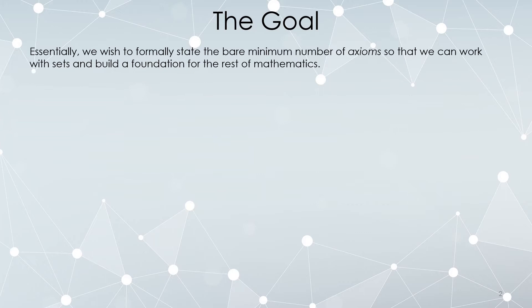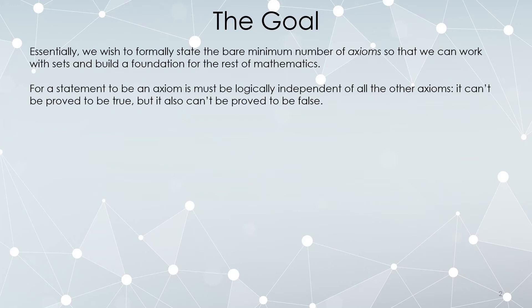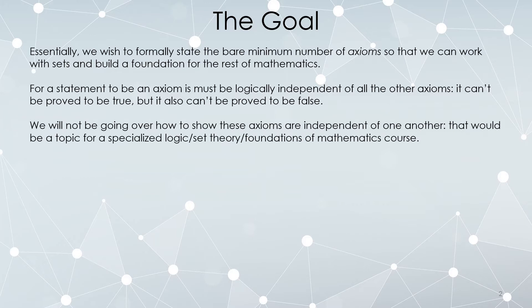In general, it is seen as desirable to have fewer axioms rather than more, because you want to take as little as possible as assumption and then derive the rest. Remember, a statement being an axiom means it's logically independent from all the axioms that came before it. If it could have been proved to be true, it wouldn't be an axiom. So to be an axiom, it can't be proved true, but also can't be proved false. We're not going to cover why these are axioms — that's a fairly specialized topic beyond our scope.